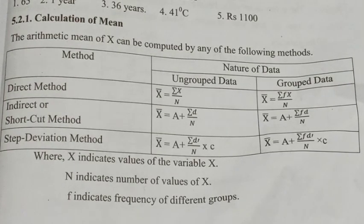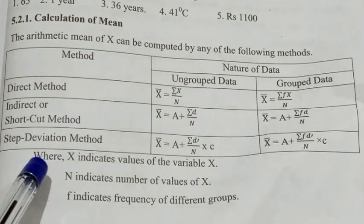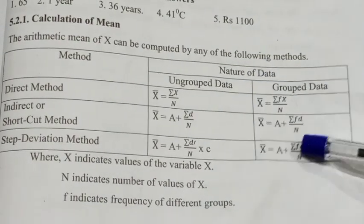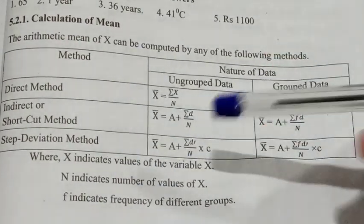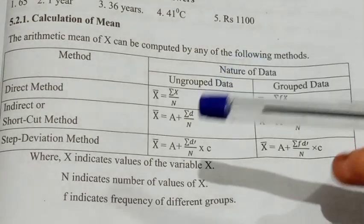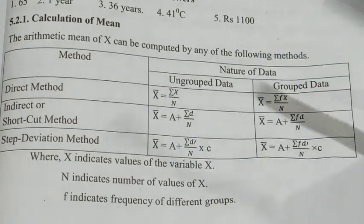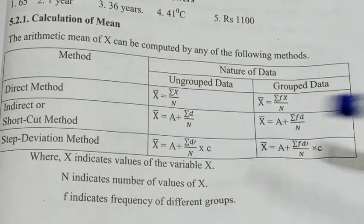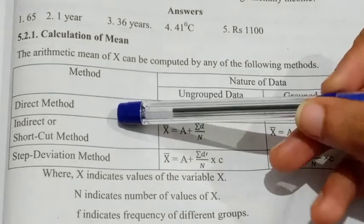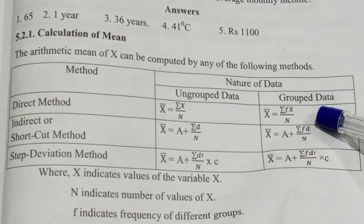The topic is how to calculate the mean. That is the direct method, indirect method, and step deviation method. The nature of data includes ungrouped data and grouped data.